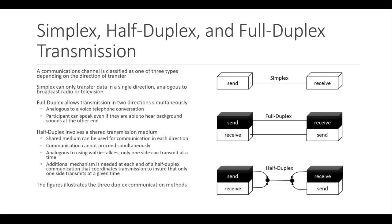Communication channels are classified based on the direction the transmission travels. Simplex transmission sends data from the sender to receiver only — for example, from a central computer to a dumb terminal. Communication can only take place in one direction and it is not possible for the receiver to send data back. An example of simplex transmission is data sent to an electronic notice board such as those found in train stations and airports.